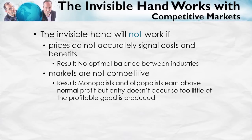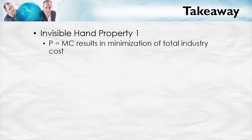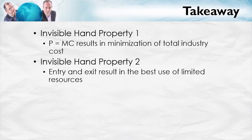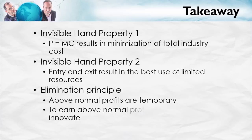To summarize: Invisible Hand Property One says the P equals MC condition results in minimization of total industry costs. Invisible Hand Property Two says that entry and exit result in the best use of our limited resources. The elimination principle says above-normal profits are temporary — and indeed, to earn above-normal profits, a firm must innovate. This is where the importance of creative destruction for a capitalist economy comes from. If you really want to profit a lot, you've got to do something different, bring something new to the table — you have to bring an innovation.